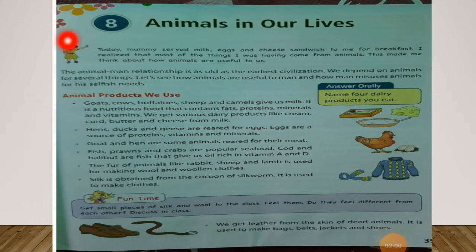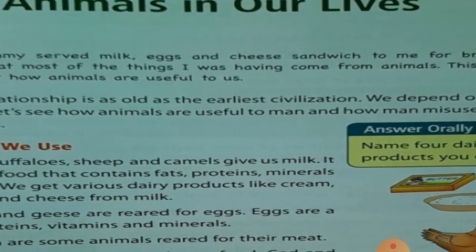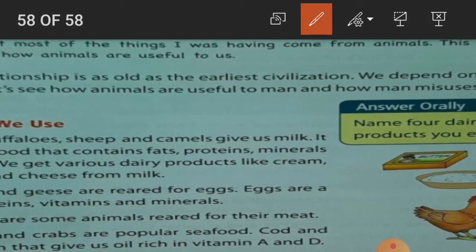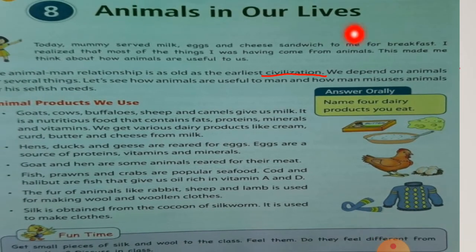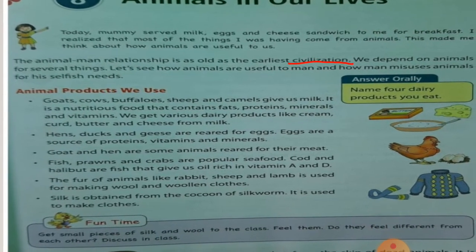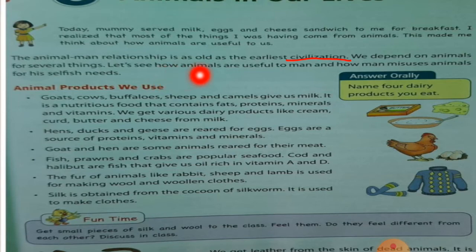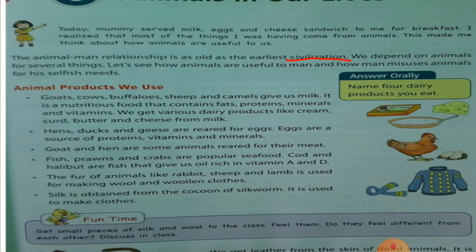The animal-man relationship is as old as the earliest civilization. Underline 'civilization' — it means culture. We depend on animals for several things. Let's see how animals are useful to man and how man misuses animals for his selfish needs. The relationship between humans and animals is as old as any old civilization.